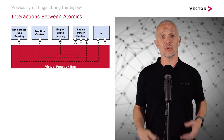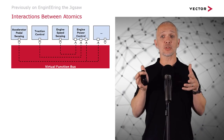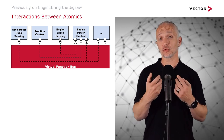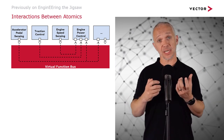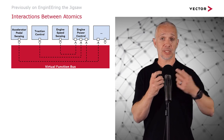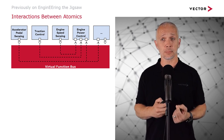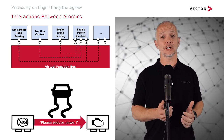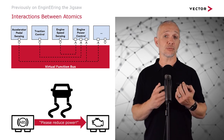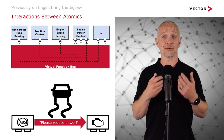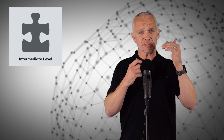Previously on Engine in the Jigsaw, we've talked about the interactions between atomics at the virtual function bus level, how we can describe the ways that software shares information, and how that information can be encoded at different levels of abstraction to get us to real source code in an ECU. We've also talked about how ECUs share information over networks to achieve top-level vehicle functionality. How do we get from the virtual function bus to that real communication?